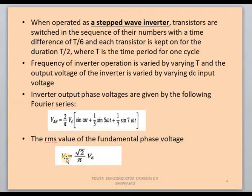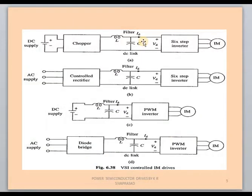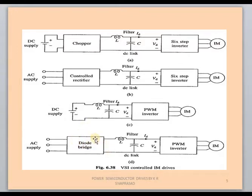These are the different schemes of controlling induction motor speed, because we need variable voltage and variable frequency. All four schemes produce variable voltage and variable frequency. In the first two diagrams we use a square wave inverter; in the next two diagrams we use a PWM inverter. For the PWM inverter, a diode bridge is sufficient — no controlled rectifier is needed, since the PWM inverter itself produces variable voltage and variable frequency. The diode bridge converts three-phase AC to DC, and harmonics are filtered using a DC link.